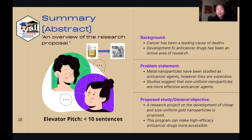The third part is the proposed study or general objective. In this section, you talk about the main objective of the project. A research project on the development of cheap and size uniform gold nanoparticles is proposed. You should also communicate the impact: this program can make high-efficacy anti-cancer drugs more accessible. With just six sentences, you have communicated the background, the problem statement, the objective, and the relevance or impact of the study.